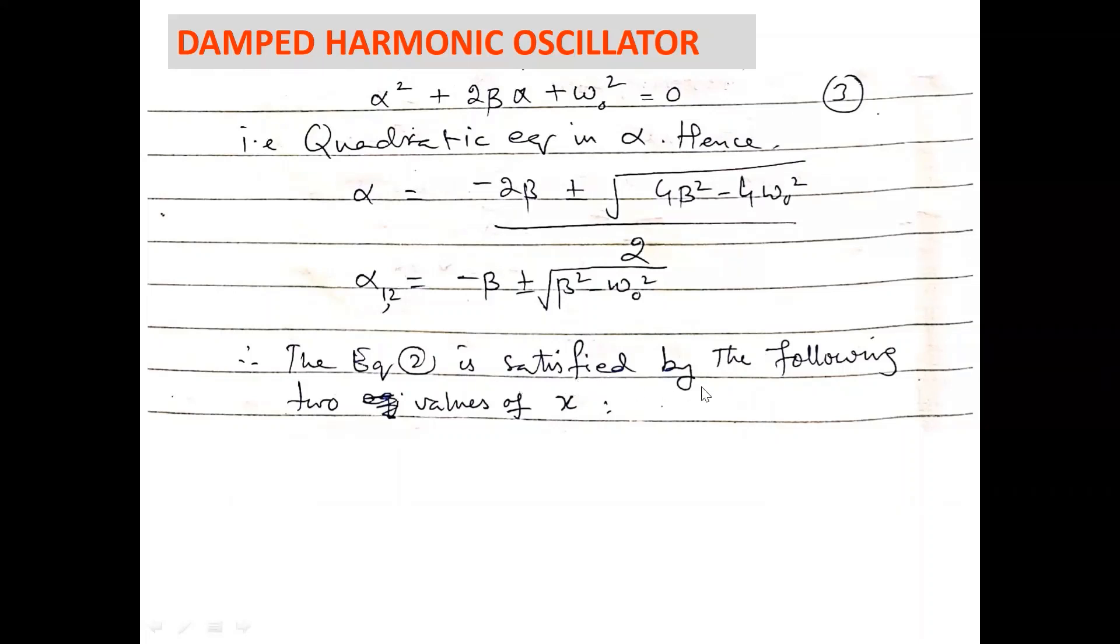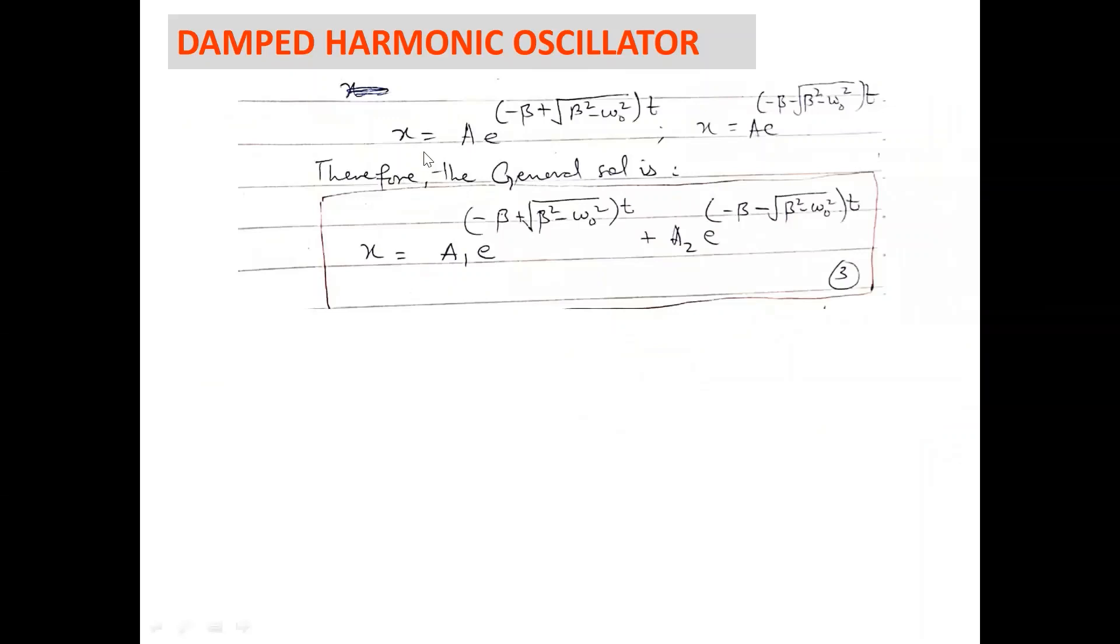Equation 2 must be satisfied by these two values. Hence, the solution would be x equals a e power this term with positive sign, and the second term would be x equals a e power with this term with minus sign. Hence, the general solution of the differential equation would be x equals a1 e power this term plus a2 e power this term. Next we will apply different conditions. Based on that, we will check whether the damping is over damped case or under damped case or critical damped case.